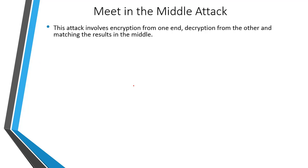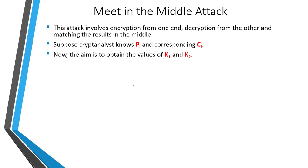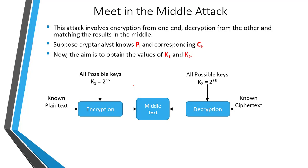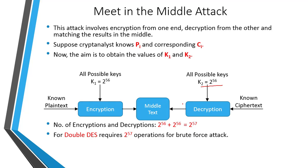We will see how an attacker can perform the meet-in-the-middle attack on Double DES. This attack involves encryption from one end and decryption from the other end, then matching the results in the middle. Assume the cryptanalyst knows a plain text and ciphertext pair. The aim is to find K1 and K2. The cryptanalyst tries all possible keys K1 on the known plain text, stores the output in Table 1, then performs decryption on the known ciphertext using all possible keys K2 and stores the result in another table. Total operations: 2 raised to 56 encryptions plus 2 raised to 56 decryptions — so Double DES requires only 2 raised to 56 operations for this attack.